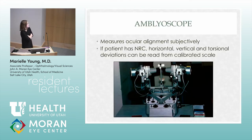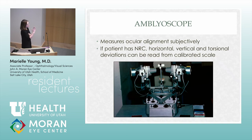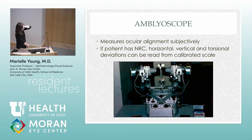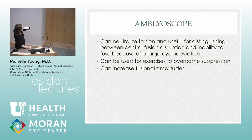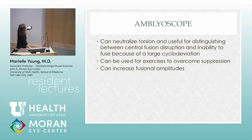Sometimes on the oral boards they ask about unusual devices like the amblyoscope. Someone sits inside and dials in exactly what they have — it tells you how much esotropia, how much hypertropia, and how much torsion in primary gaze, read from a calibrated scale. It's useful for people who were binocular and then developed diplopia, to figure out how to re-align them. It can also be used for fusional amplitude exercises, though it's an old-school machine.